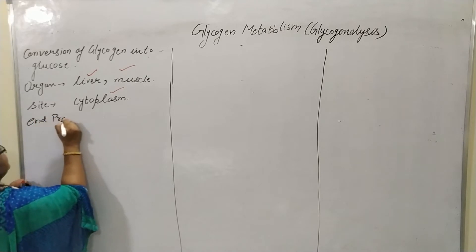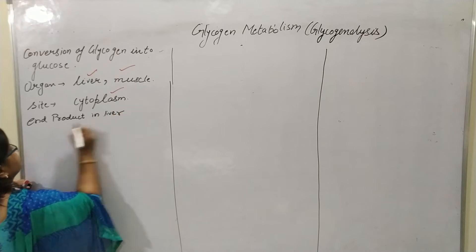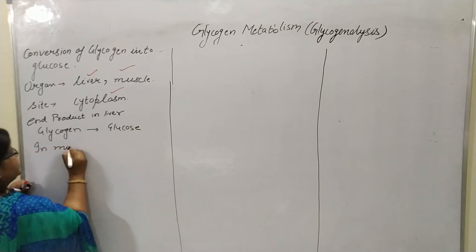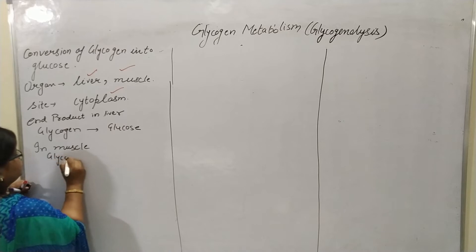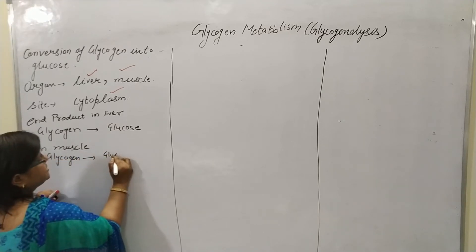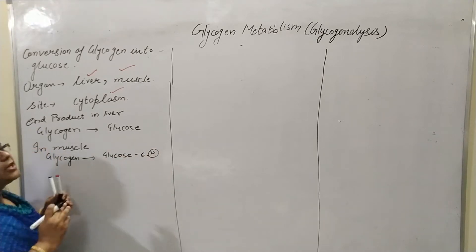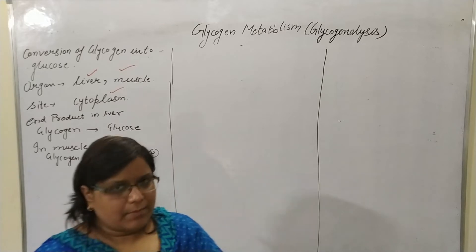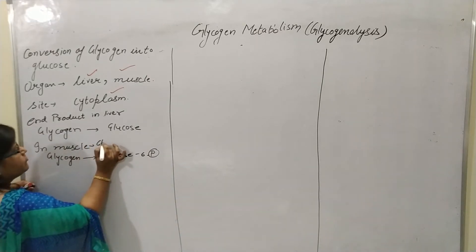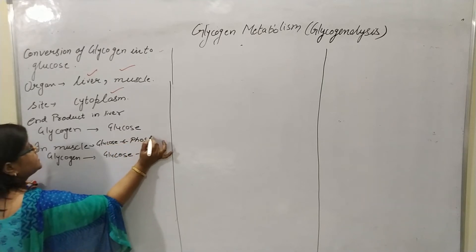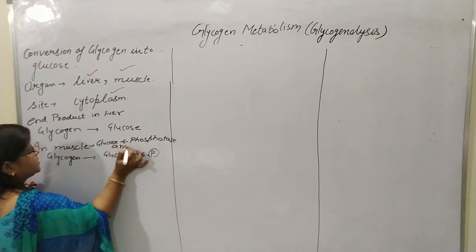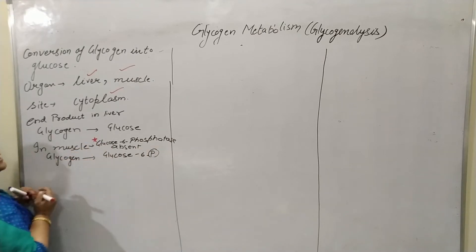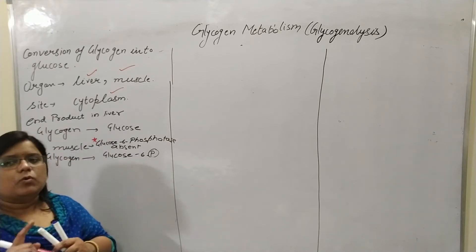To summarize: end product in liver is glycogen to glucose, but in muscle the end product is glycogen to glucose-6-phosphate. Why? Because the enzyme glucose-6-phosphatase, which converts glucose-6-phosphate into glucose, is absent in the muscle. This is the main point — glucose-6-phosphatase enzyme is absent in the muscle, that is why the end product of glycogenolysis in muscle is glucose-6-phosphate.